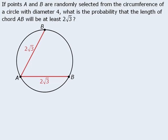From here, we need to recognize that if we place point B anywhere on the blue portion of the circumference, then the length of chord AB will be less than 2 root 3. Conversely, if we place point B anywhere on the gold portion of the circumference, the length of chord AB will be greater than 2 root 3.